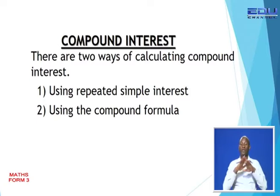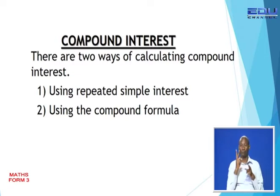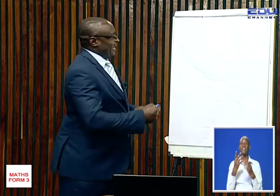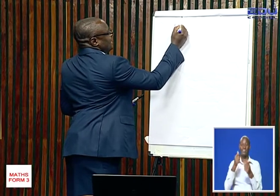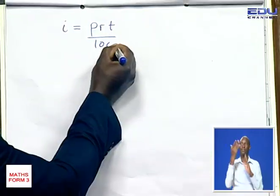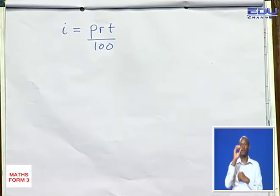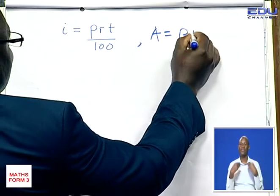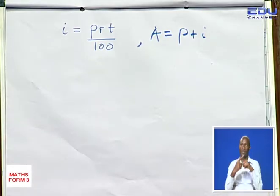When working with Compound Interest, there are two ways of calculating it. One method is known as the Repeated Simple Interest Method. Remember in our previous class, we looked at simple interest, where interest is given by PRT divided by 100, and we agreed that amount is given by principal plus interest.